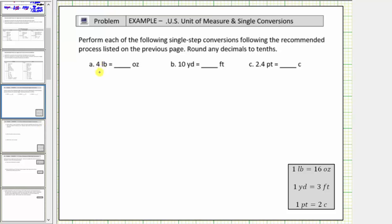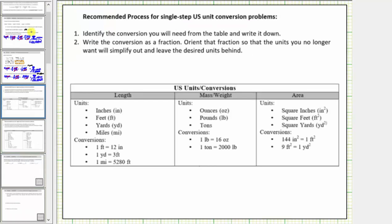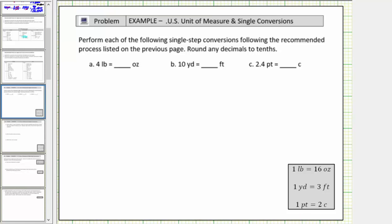We were asked to convert pounds to ounces, so we need to find a conversion from pounds to ounces. Looking at our conversion tables, this is the conversion we need: one pound equals sixteen ounces. I already have this on the slide here at the bottom, so to begin we write four pounds as a fraction with a denominator of one — so we have four pounds over one — and now we multiply by a unit fraction that will convert four pounds to ounces.